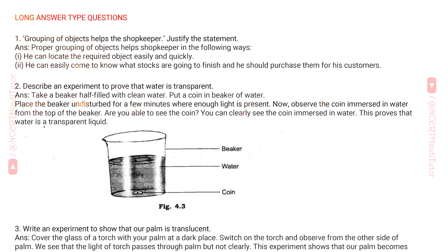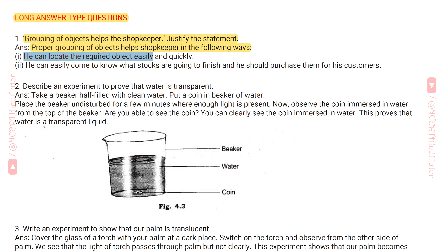Question 1: Grouping of objects helps the shopkeeper — justify the statement. Answer: Proper grouping of objects helps a shopkeeper in the following ways. First, he can locate the required object easily and quickly. Second, he can easily come to know what stocks are going to finish and he should purchase them for his customers.